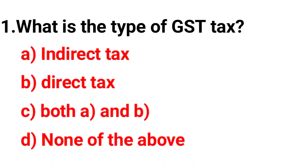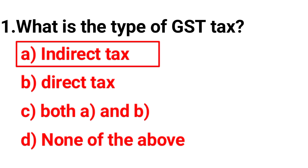Question number 1. What is the type of GST tax? Option A: Indirect tax. Option B: Direct tax. Option C: Both A and B. Option D: None of the above. The correct answer is Option A, Indirect tax.